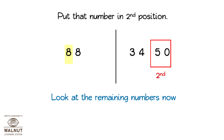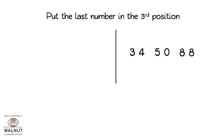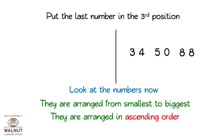Look at the remaining numbers now. Which one is the smallest? 88. Put the last number in the third position. Look at the numbers now. They are arranged from smallest to biggest. They are arranged in ascending order.